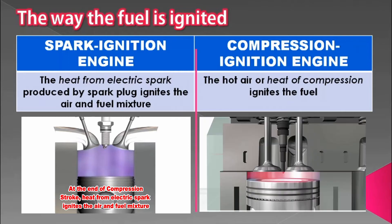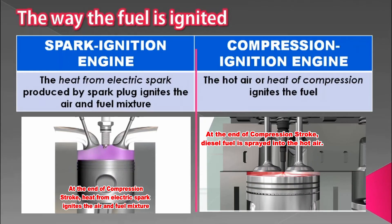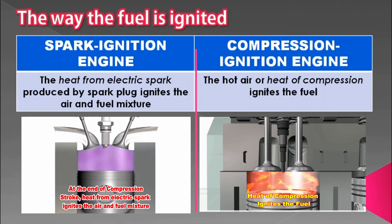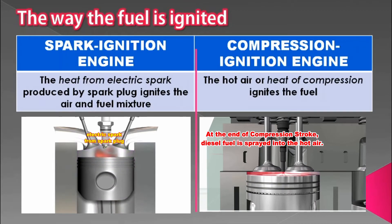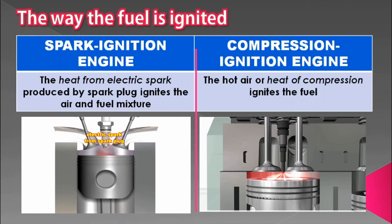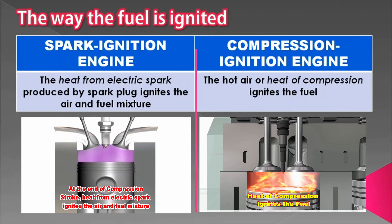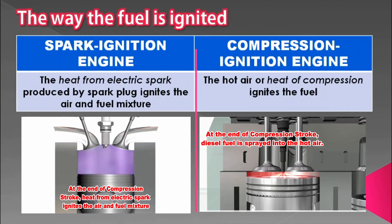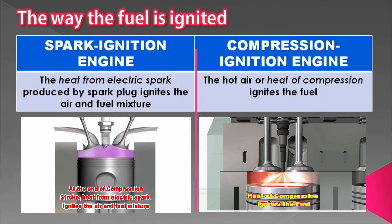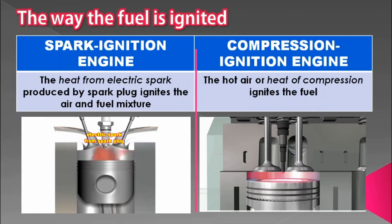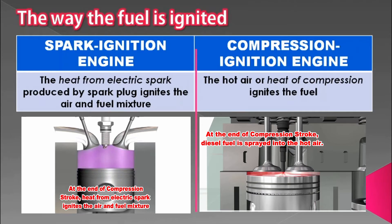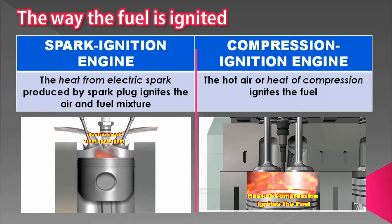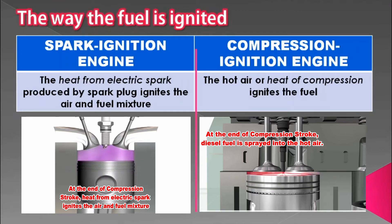In the compression ignition engine, the hot air — or heat of compression — ignites the fuel. During the intake stroke, only air is drawn in. The piston then compresses the air, so a high compression ratio is needed to heat the air inside the cylinder. Near the top dead center, diesel fuel is sprayed in, and the heat of compression ignites the fuel to produce the power stroke.